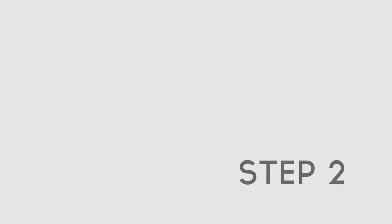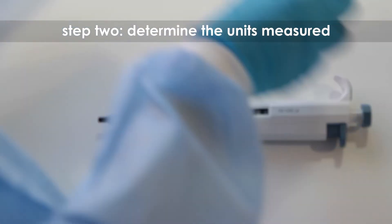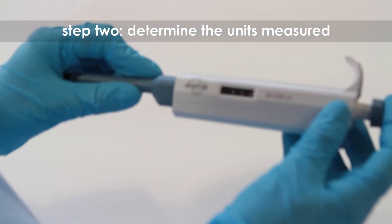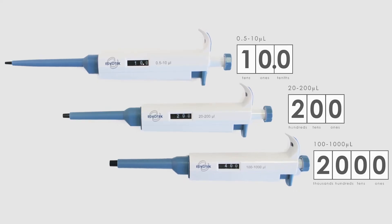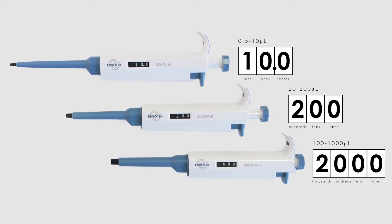Step 2. Determine the units measured by the micropipette by looking at the volume setting on the side of the micropipette. Note that different micropipettes use different scales for their measurements.